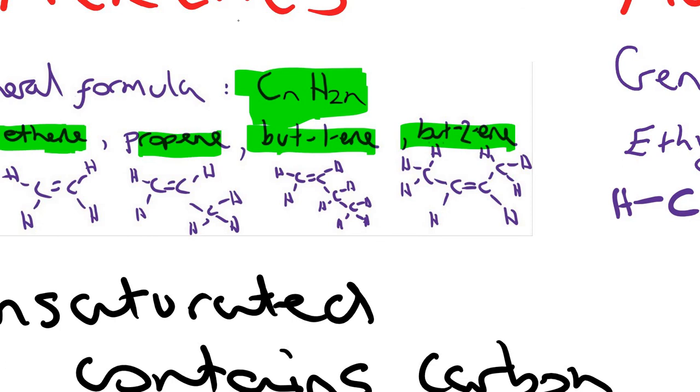Structural isomers, if you remember, are molecules which have a different structural formula but the same molecular formula. That means they have the same number of carbon and hydrogen atoms, but they are just rearranged differently. So they are attached to each other in different ways.